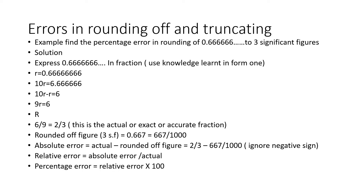The relative error equals the absolute error divided by the actual value. The percentage error equals the relative error times 100. When working this out on a calculator, unless you have been told to give your answer to specific significant figures or decimal places, just write whatever figure appears on the calculator screen. Do not round off during working — only round off at the end if the question requires it.